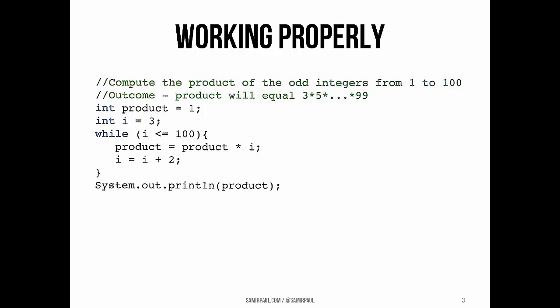So here's the correct version. We're calculating the product of all the odd integers from 1 to 100. So you can see we start with a variable product which has the value 1 and we're starting our loop at i equals 3. As long as i is less than or equal to 100, we are multiplying product by the current value of i and storing that back into product and then incrementing i by 2. Finally at the end, when we exit the loop, we print the product. That's correct. That works.